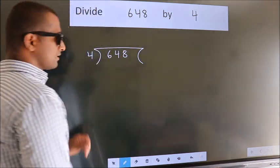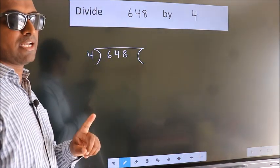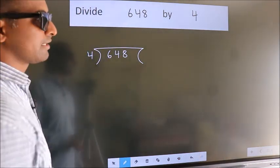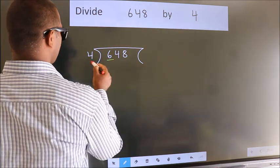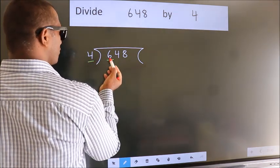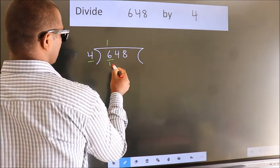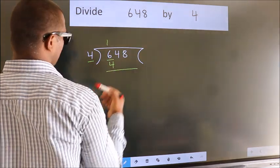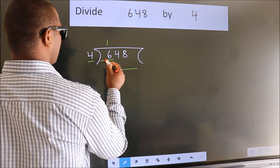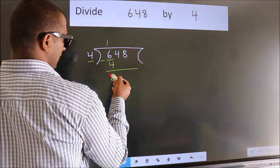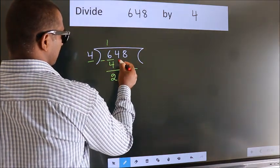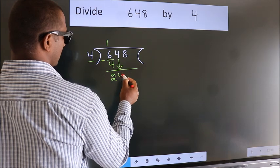This is your step one. Next, here we have six. Here, four. A number close to six in four table is four ones four. Now we should subtract. We get two. After this, bring down the beside number, so four.